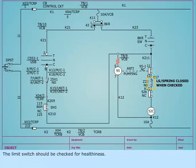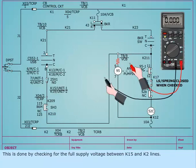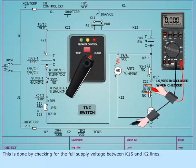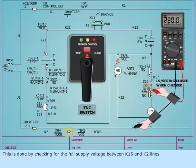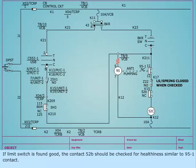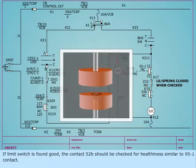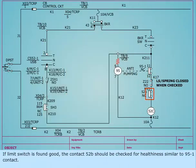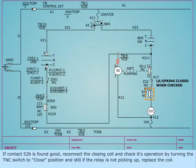The limit switch should be checked for healthiness. This is done by checking for the full supply voltage between K15 and K2 lines. If the limit switch is found good, the contact 52B should be checked for healthiness similar to the 95-1 contact. If the contact 52B is found good,